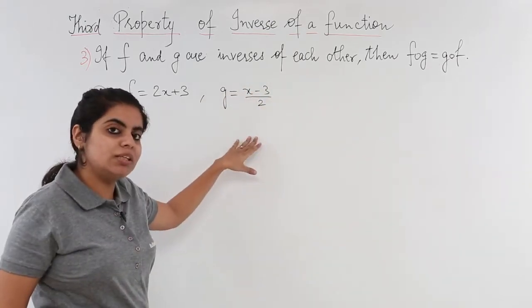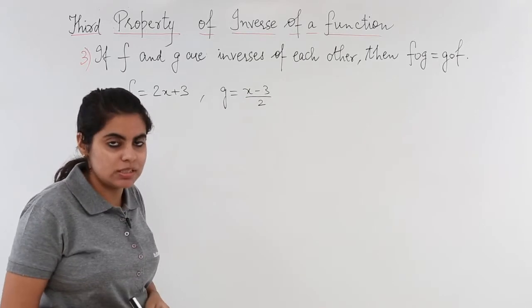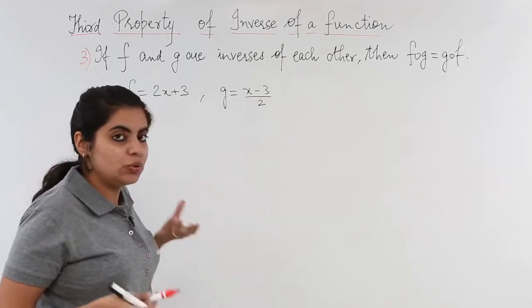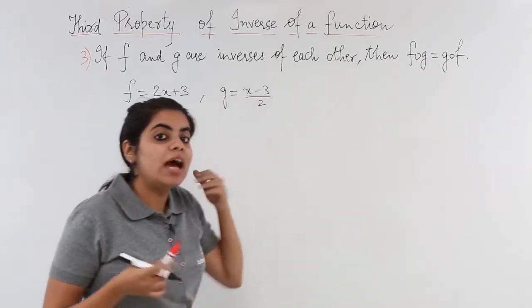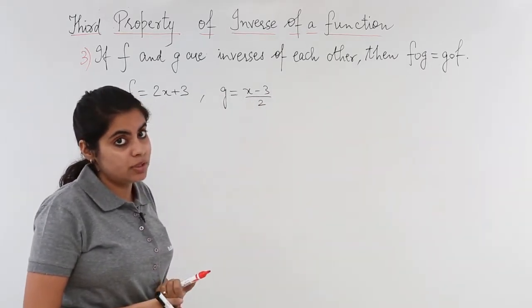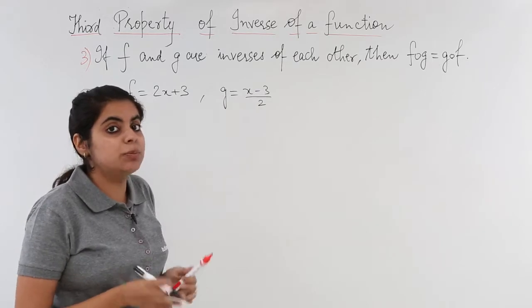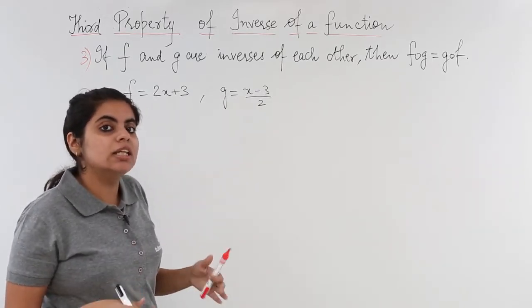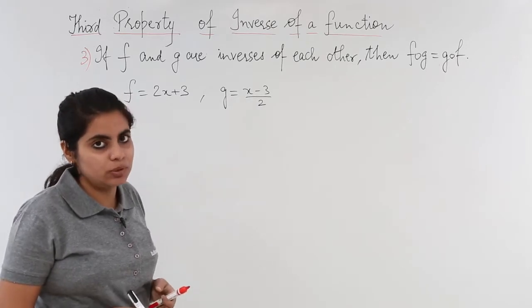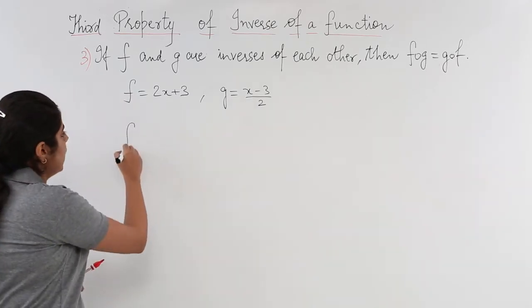Now what we need to do is find first fog, then gof, and then see whether these are equal or not. If these are equal, it will be proved that if there are two inverse functions, their compositions are actually equal. So let's find out fog.